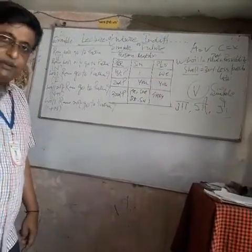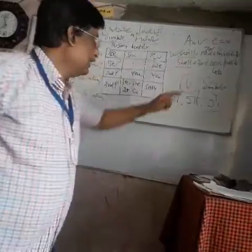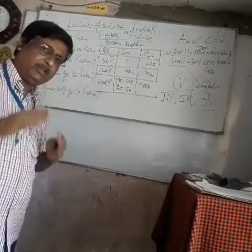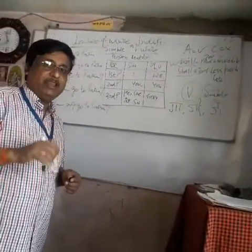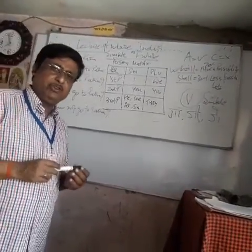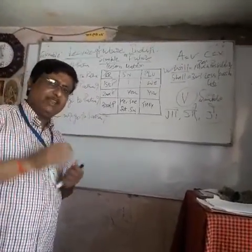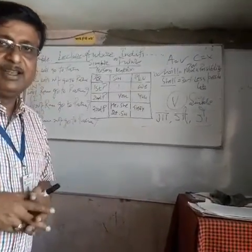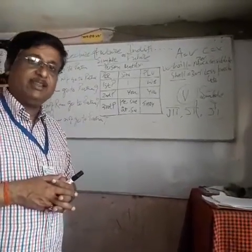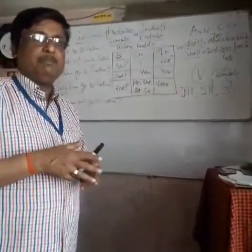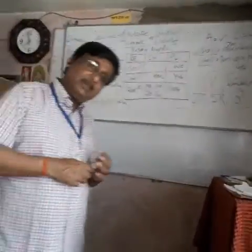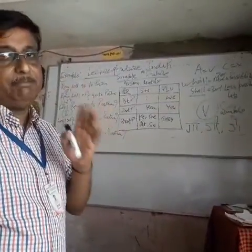If we add 'shall', it means less possibility — the level and degree of possibility is only around 30%. For example, 'I shall beat you' — there is a very lean chance that I will beat you. But if I say 'I will beat you', it means there is more than 50%, even around 65-75% chance that I will beat you.